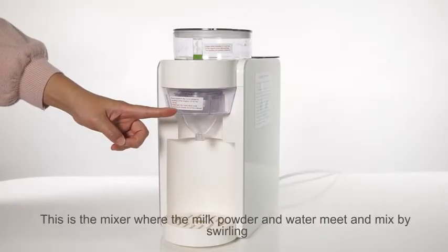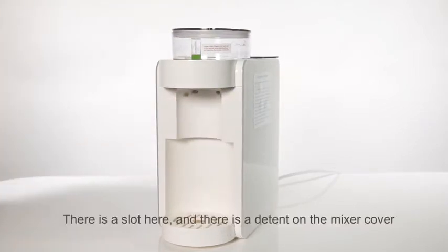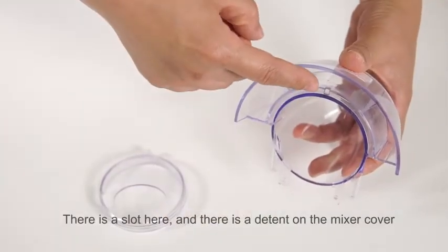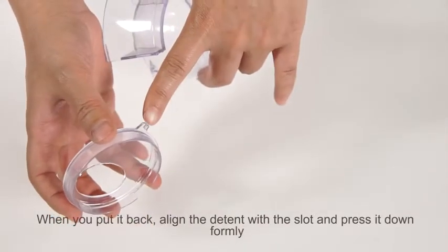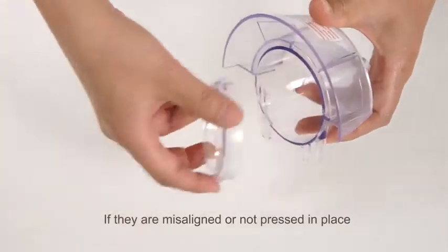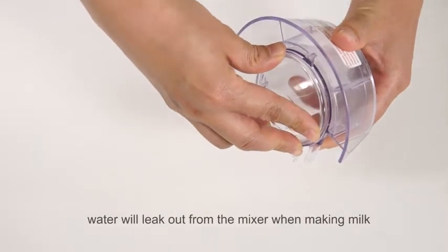This is the mixer where the milk powder and water meet and mix by swirling. There is a slot here and there is a detent on the mixer cover. When you put it back, align the detent with the slot and press it down firmly. If they are misaligned or not pressed in place, water will leak out from the mixer when making milk.